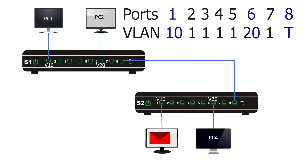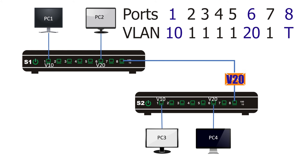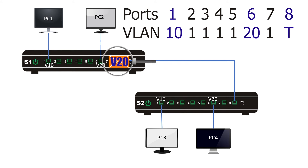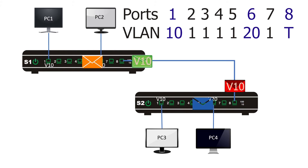PC3 receives the frame in its original format from port 1. When PC4 generates a broadcast frame, it reaches port 6 (VLAN 20). The trunk port adds a VLAN header containing VLAN 20 and forwards it. The frame reaches switch 1 on the trunk port, which reads and removes the VLAN information, then gives the frame to all ports with VLAN ID 20, which forward it in its original format. This way, a single trunk connection is enough to exchange all VLAN traffic between two switches.